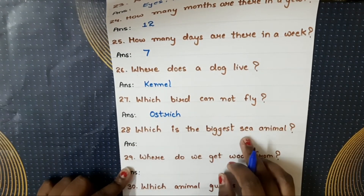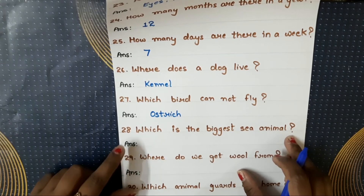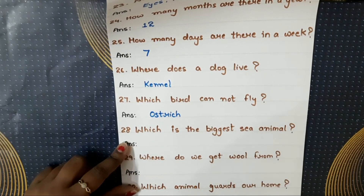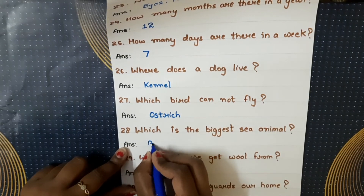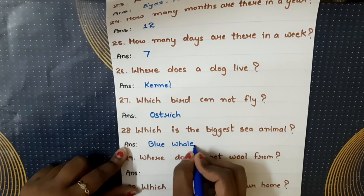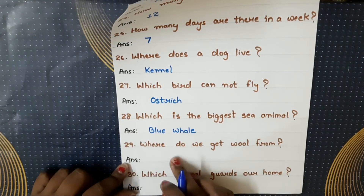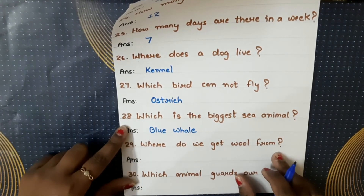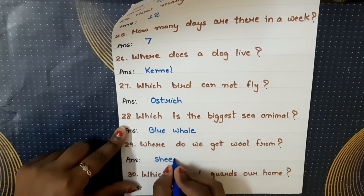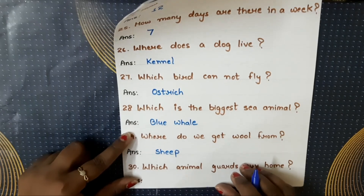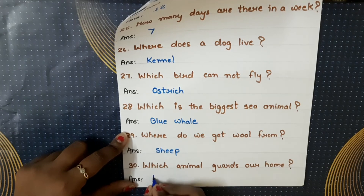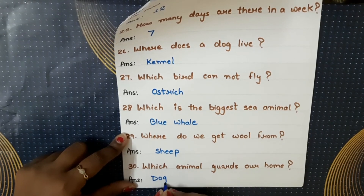Which is the biggest sea animal? Kaunsa aisa animal hai jo sea mein rehta hai aur sabse bada hai? The answer is blue whale. Where do we get wool from? Humain wool kahan se milta hai? The answer is sheep. Which animal guards our home? Humare gher ki rakhwali kaun karta hai? Dog.